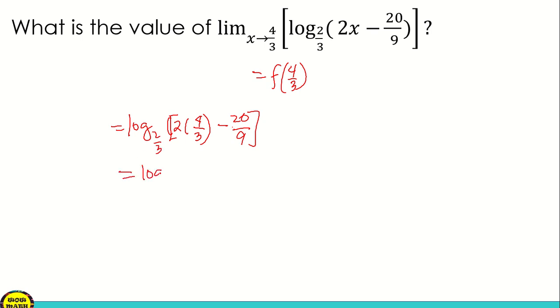And then log of, so this is 2 times 4, that's 8/3 minus 20/9 with base 2/3. To get this, find the LCD, that is 9. 9 divided by 3 is 3 times 8, 24 minus 9 divided by 9 is 1 times 20, which is 20.